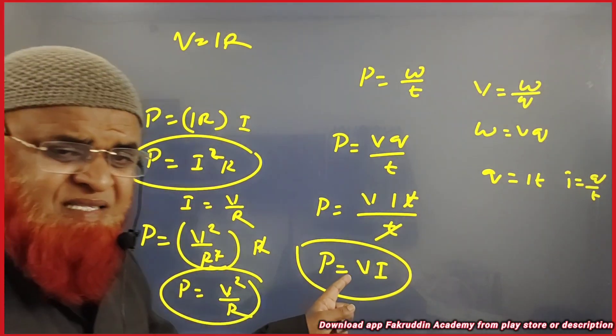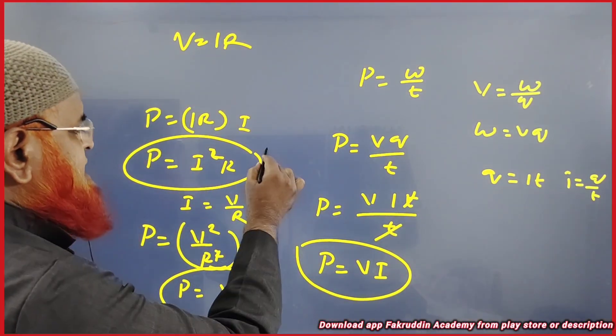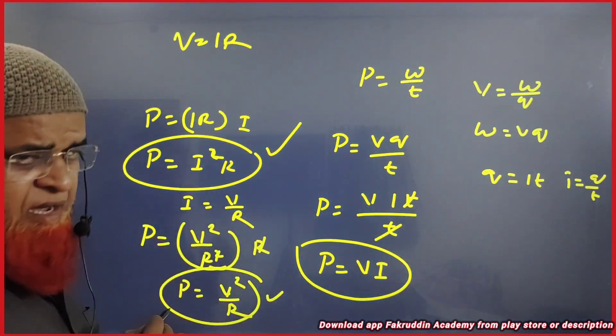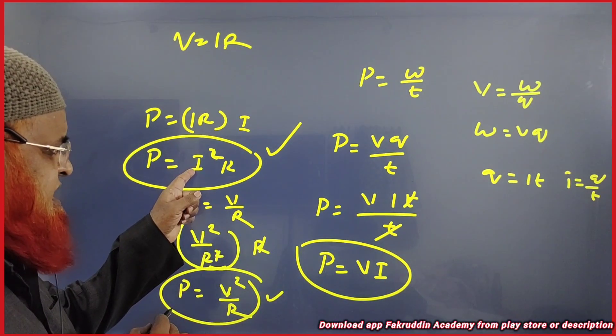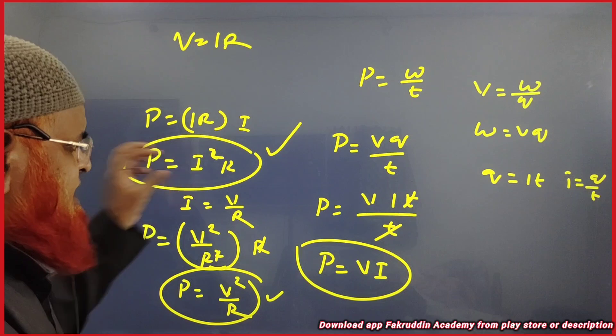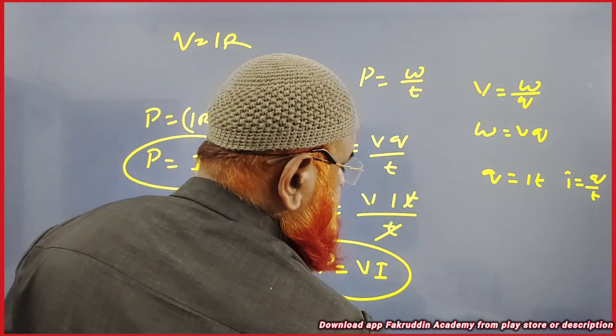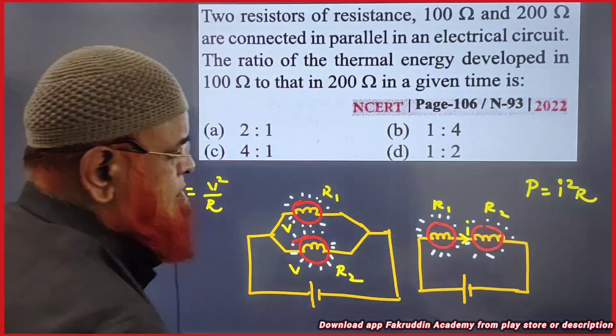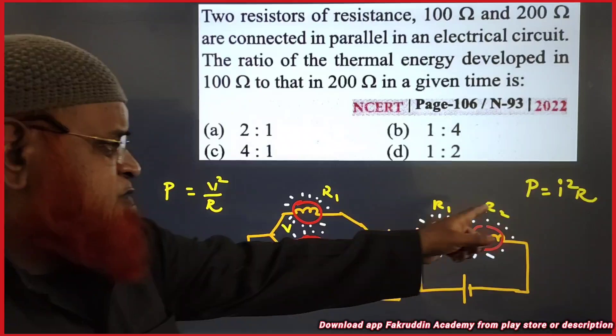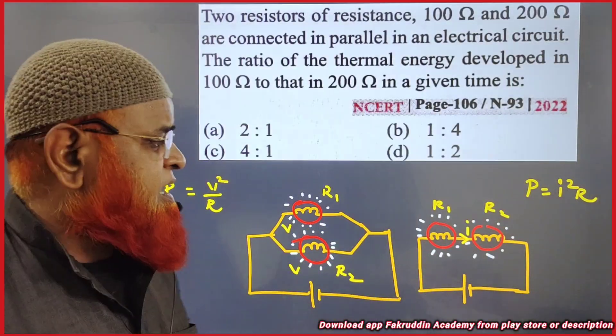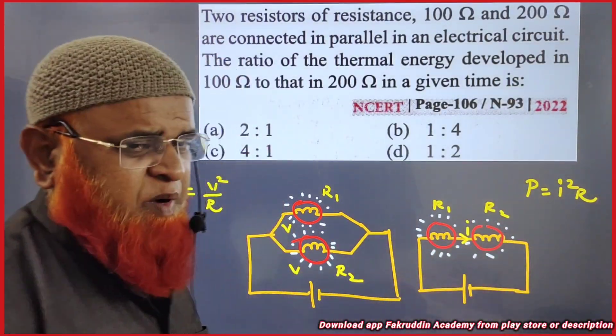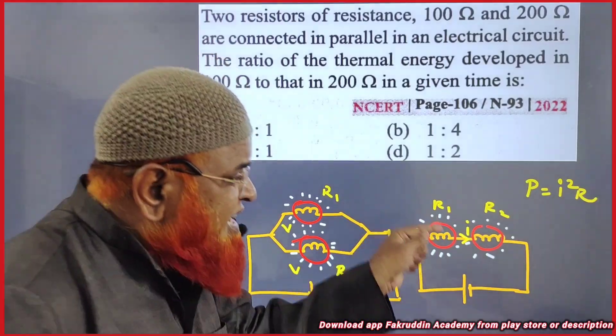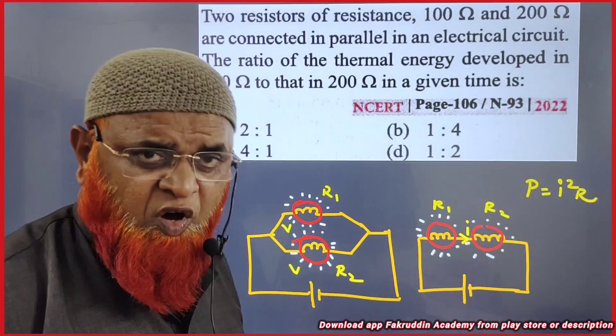Here, when does this formula applicable and when is this formula applicable? See here, current is present here. So this formula is applicable when the series connection is present and current passing is same. When the current is same, we apply this formula.